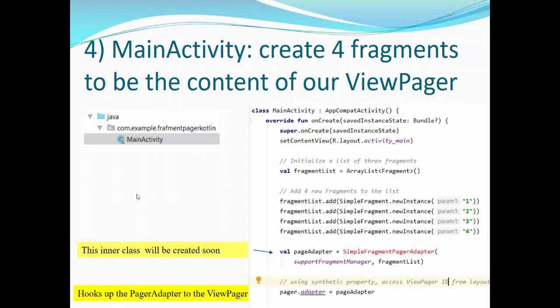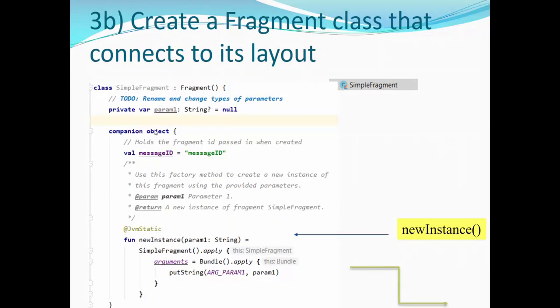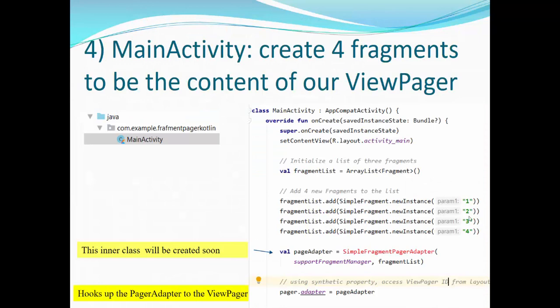The next step is main activity. Create four fragments to be the content of our view pager. So we just make a list of four fragments with parameters one, two, three, four, all strings here. And then this is when we call this newInstance method. We just put the string for this method to the bundle. Then we have to supply adapter for the class. We name it simple fragment page adapter with the fragment manager and fragment list. Please note, this class will be created soon in the next slides. And finally, we're using synthetic property to access view pager ID from the layout and assign page adapter to adapter. It hooks up the pager adapter to the view pager.